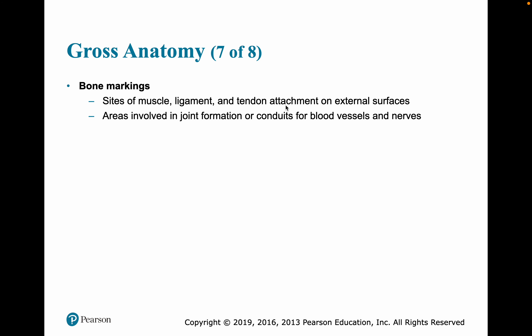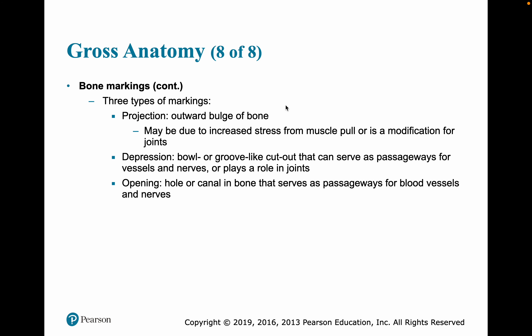Bones also have numerous markings on them. Those markings are the sites of muscle, ligament, and tendon attachment on external surfaces, as well as areas involved in joint formation or conduits for blood vessels and nerves. Three types of markings are projections, depressions, and openings.